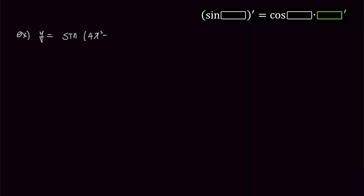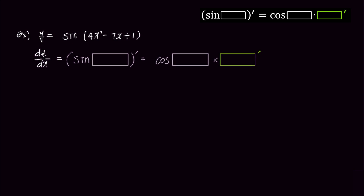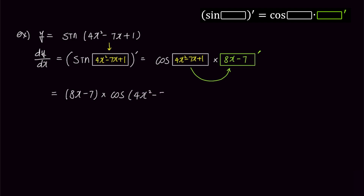y equals cosine of 4x squared minus 7x plus 1. To find dy/dx, we will use the formula shown above. Knowing that the derivative of the sine function is cosine, by comparing with the problem, the expression 4x squared minus 7x plus 1 goes into the box. We put 4x squared minus 7x plus 1 into the right box as well. Now all you need to do is put the derivative of 4x squared minus 7x plus 1, which is 8x minus 7, into the green box prime. Writing the answer in a more organized way, the solution is 8x minus 7 times cosine of 4x squared minus 7x plus 1.